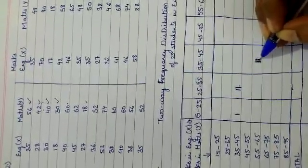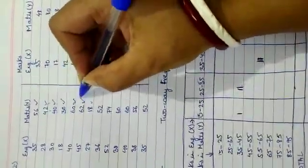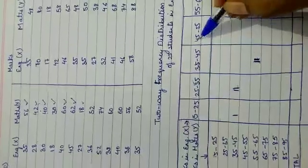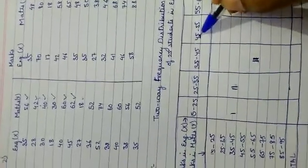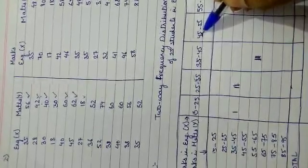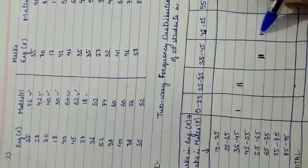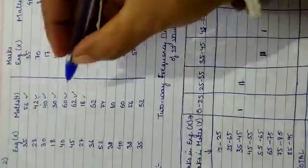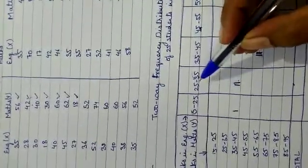Next is X=45 and Y=62. Since 45 is an integral value, it is included in the 45–55 interval, and Y=62 falls in the 55–65 group. Then X=27 and Y=18: X=27 goes in 25–35 and Y=18 goes in 15–25, so one tally mark there.